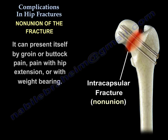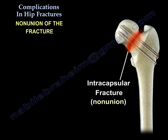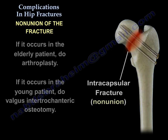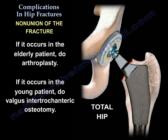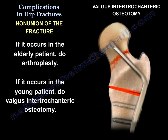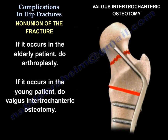Nonunion can present with groin or buttock pain, pain with hip extension or with weight bearing. It occurs in about 5% of non-displaced fractures and about 25% of displaced fractures. If it occurs in elderly patients, you will do arthroplasty. If it occurs in a young patient, you will do valgus intratrochanteric osteotomy.